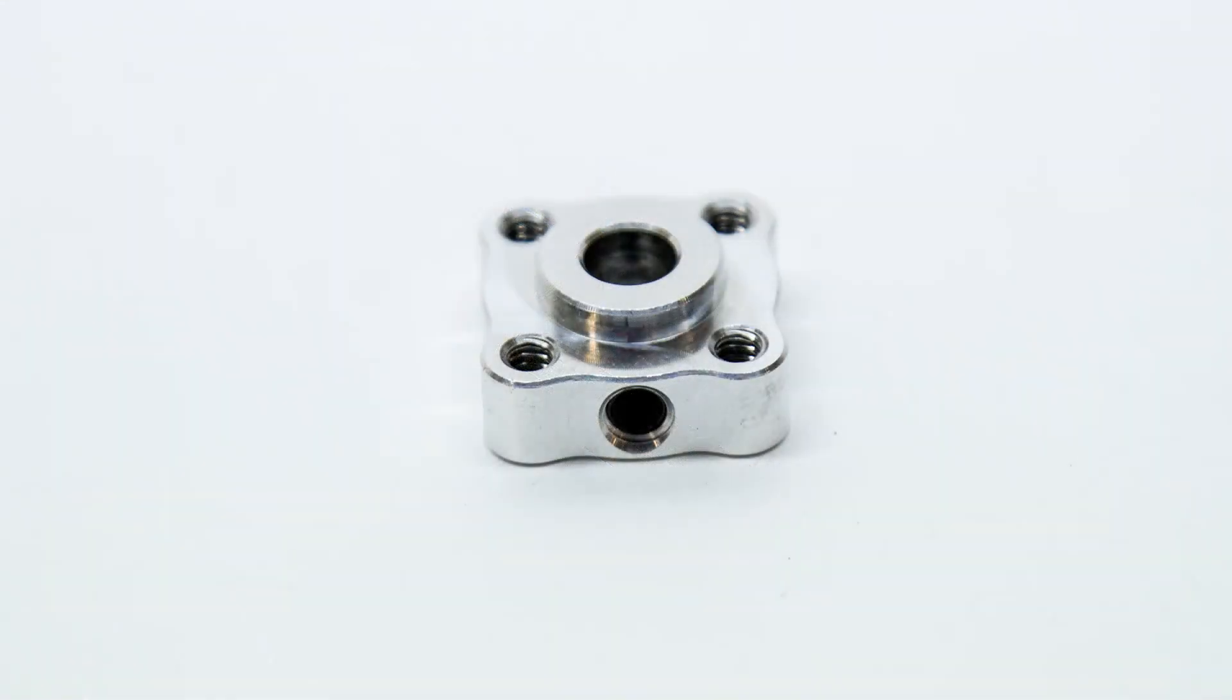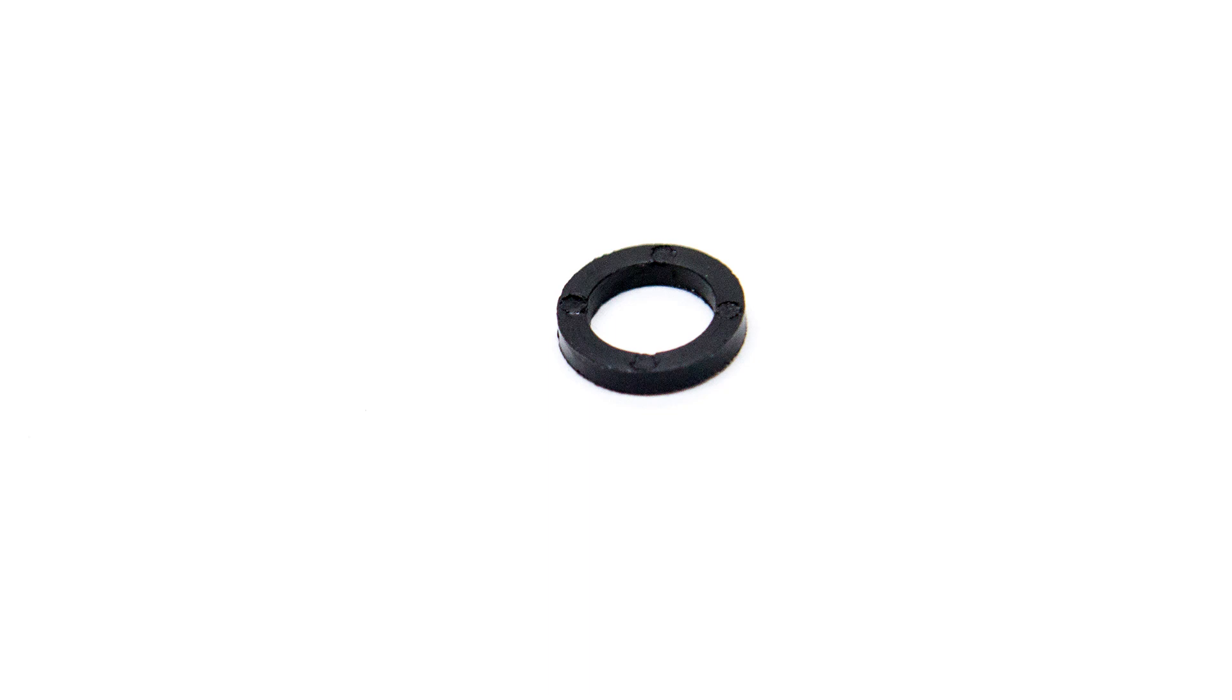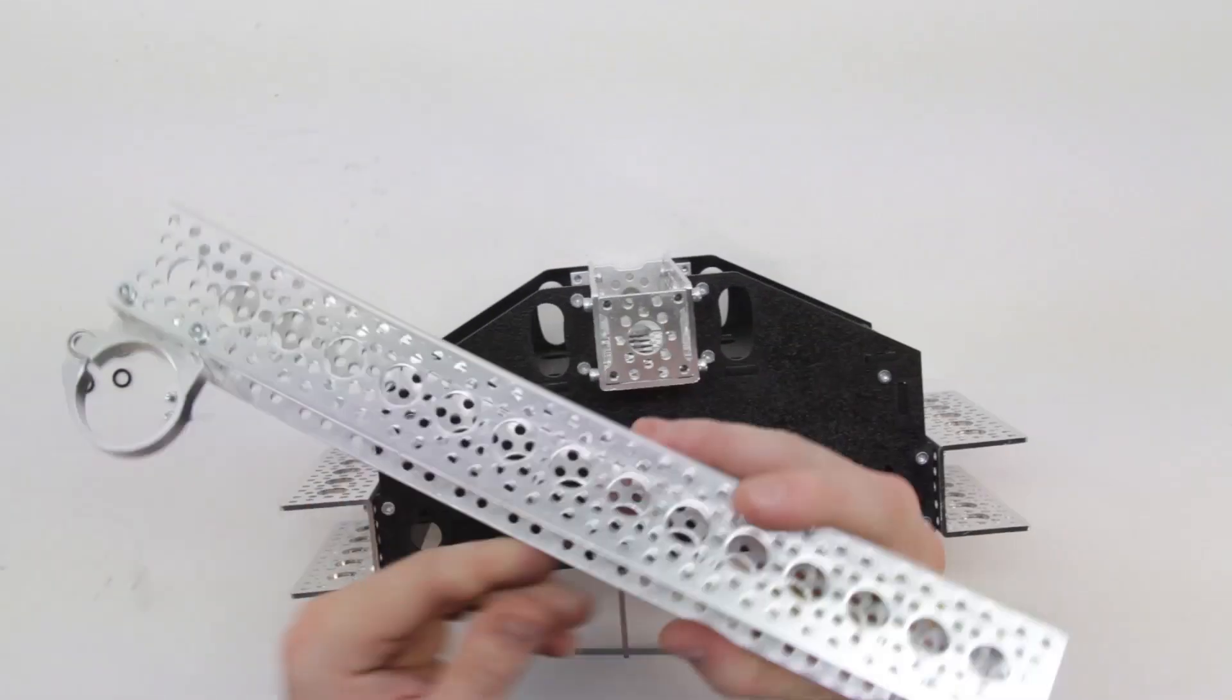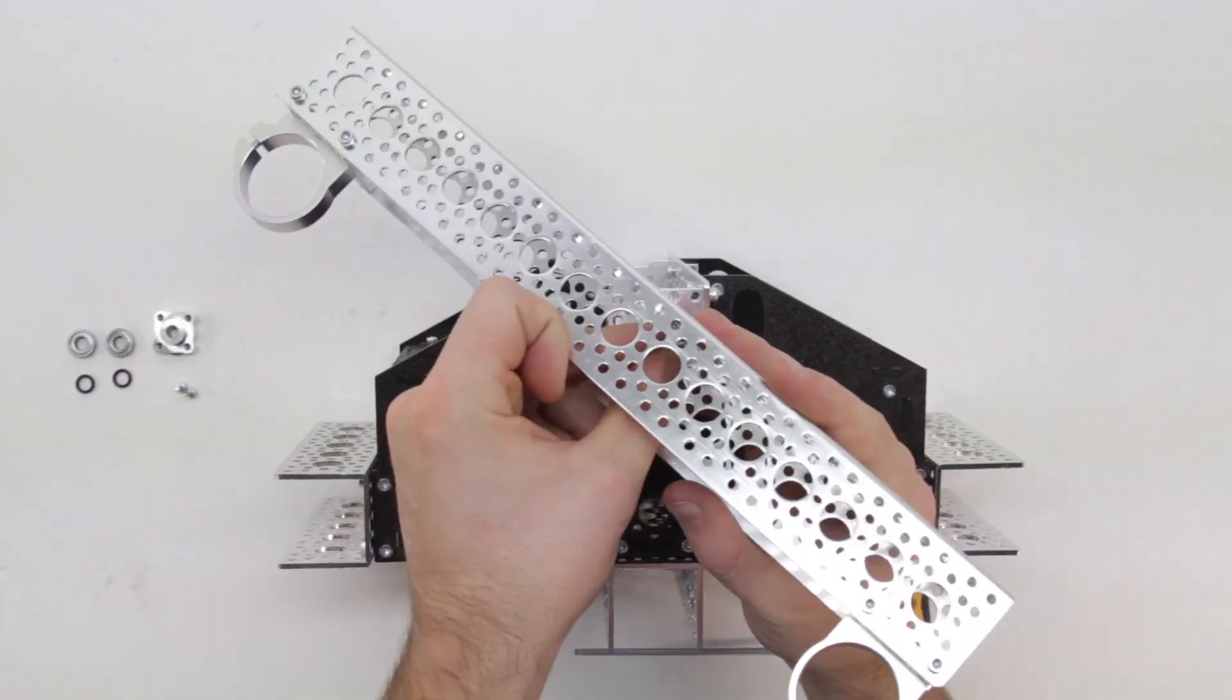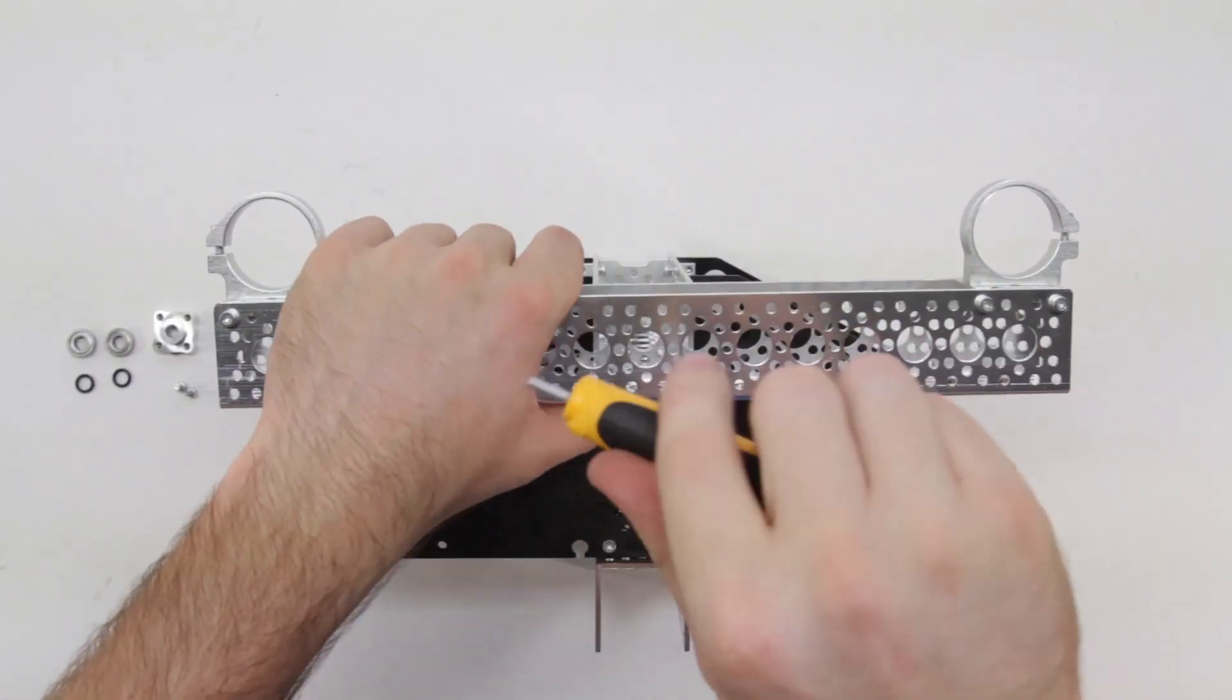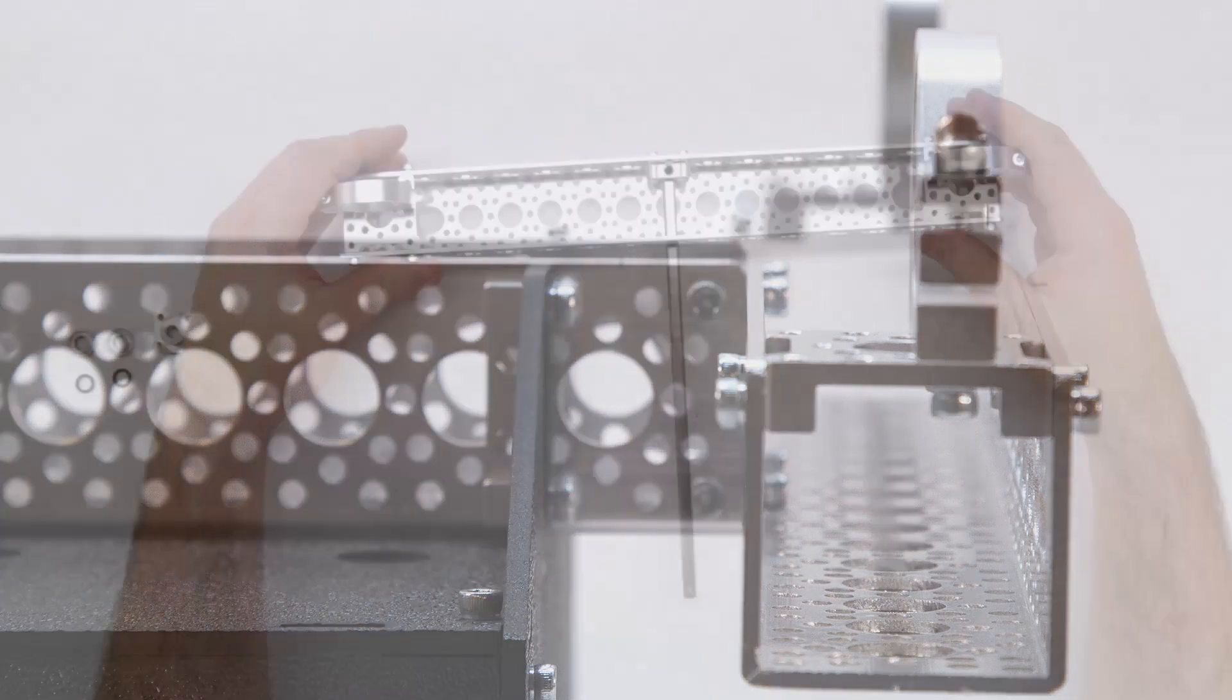Next you will need another 1/4 inch bore set screw hub, two flanged ball bearings, and two plastic spacers. First attach the other piece of 12 inch channel to the side of the chassis that has the quad hub mount. When doing so, make sure to orient the channel so that the motor mounts are facing out away from the chassis.